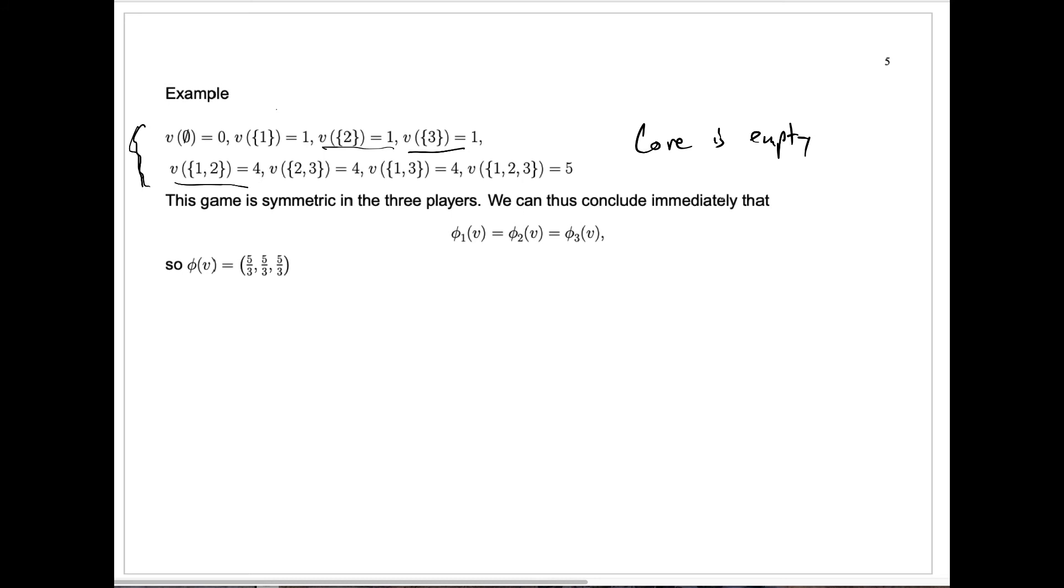Because it's symmetric, we can conclude immediately that by the symmetry axiom for the Shapley values that φ₁(v) is the same as φ₂(v) is the same as φ₃(v).